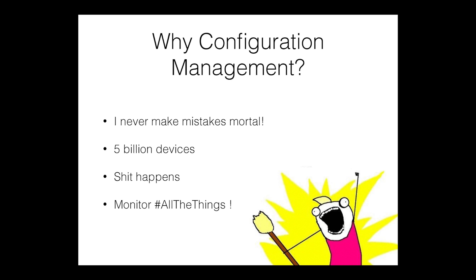Also, the five billion devices — this is a small network, that's an exaggeration — but sometimes when you're configuring device after device after device, it can feel like a billion devices. Shit happens. And also, we are in fact mortal; we can get hit by buses, and sometimes somebody else needs to take over once you've left. Security and information security is basically all about monitoring all the things.